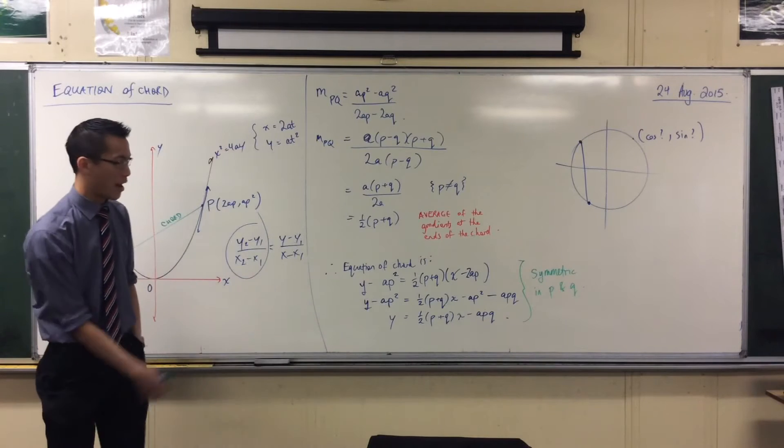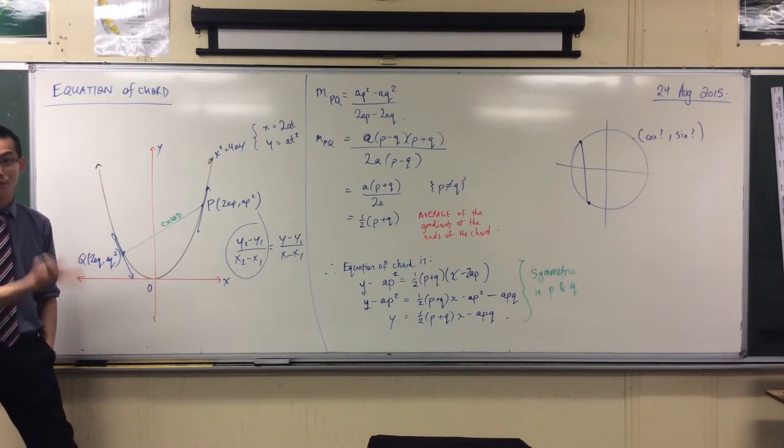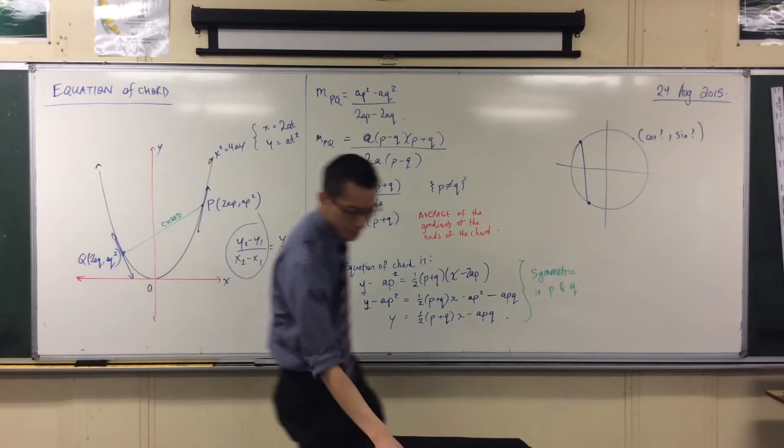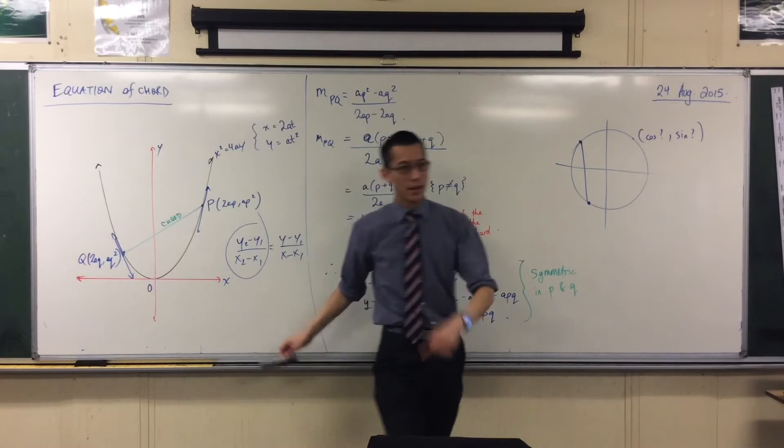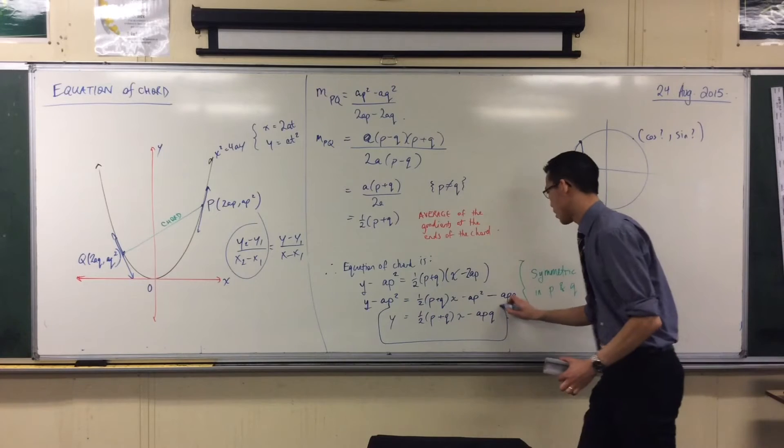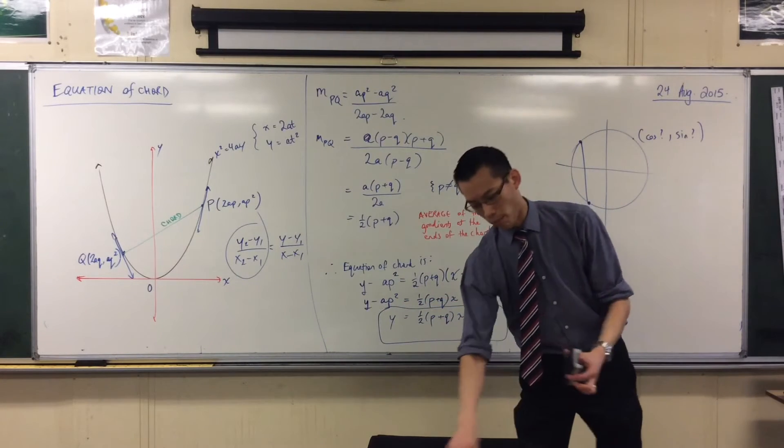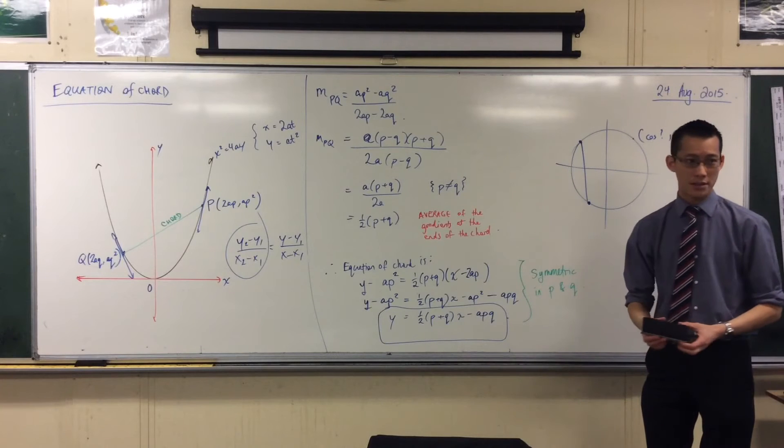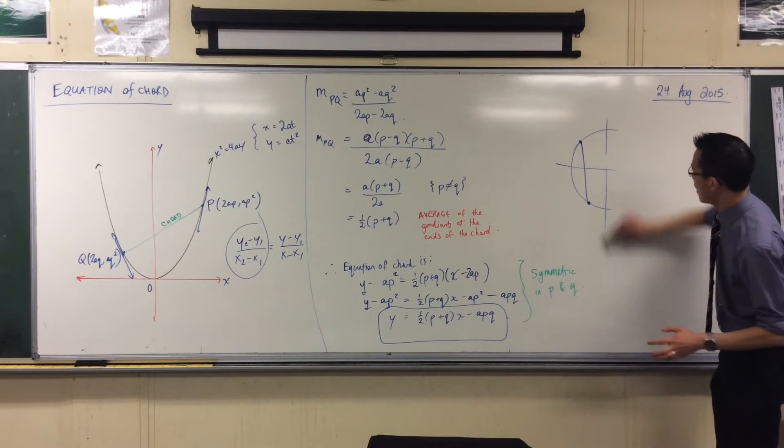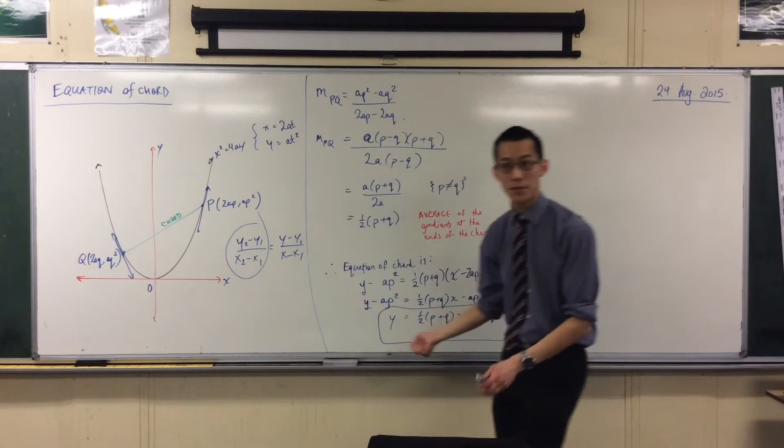So we call this equation symmetric in p and q, and there will be a variety of other ones that we get where, regardless of which one you put in, you will get the same thing because it's the same line. This is the first, I'll put a box around it, this is the first of a series of equations that you will meet under parametrics of the parabola. You do not need to memorize them. In fact, memorizing them and reproducing them in an exam is a problem.